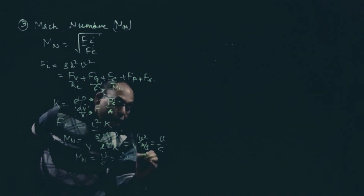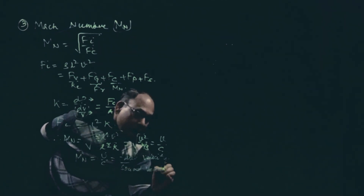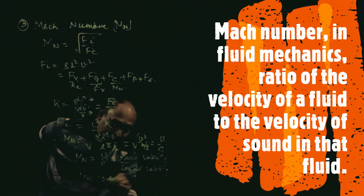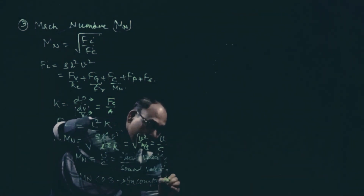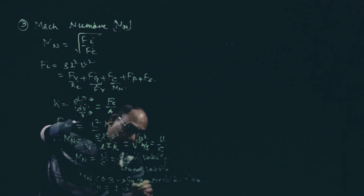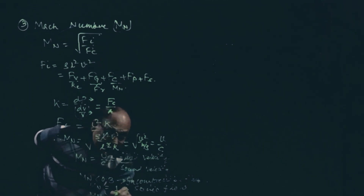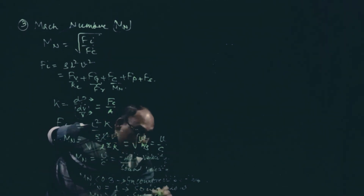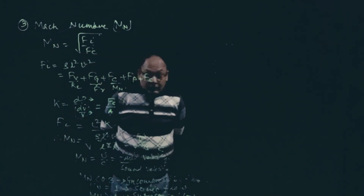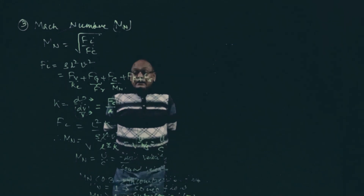Mach number is fluid velocity divided by sound velocity. If Mach number is less than 0.3, the flow is called incompressible. If Mach number equals 1, it is called sonic flow, where fluid velocity and sound velocity are equal. If Mach number is greater than 1, it is called supersonic flow. Mach number decides the type of flow and is used in missile and rocket launching, and other space applications.